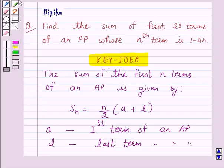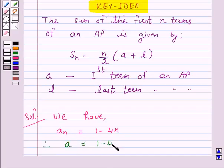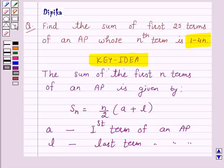Now according to the given question, the nth term of an AP is 1 minus 4n. So we have An equals 1 minus 4n. So the first term of an AP is given by a equals 1 minus 4 times 1, which is equal to 1 minus 4, which is further equal to minus 3.